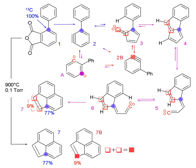Some of the most common stable isotopes are 2H, 13C, and 15N, which can further be produced into NMR solvents, amino acids, nucleic acids, lipids, common metabolites, and cell growth media.